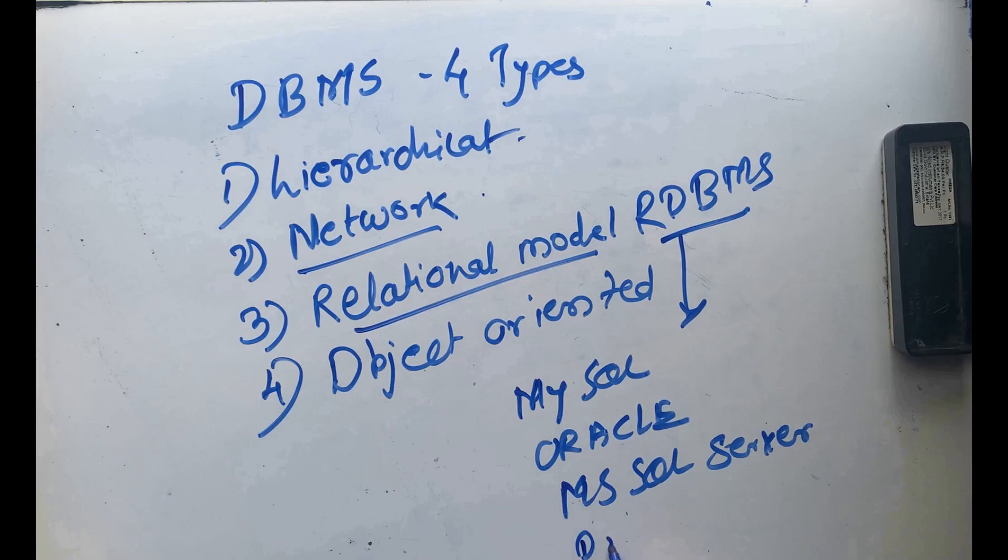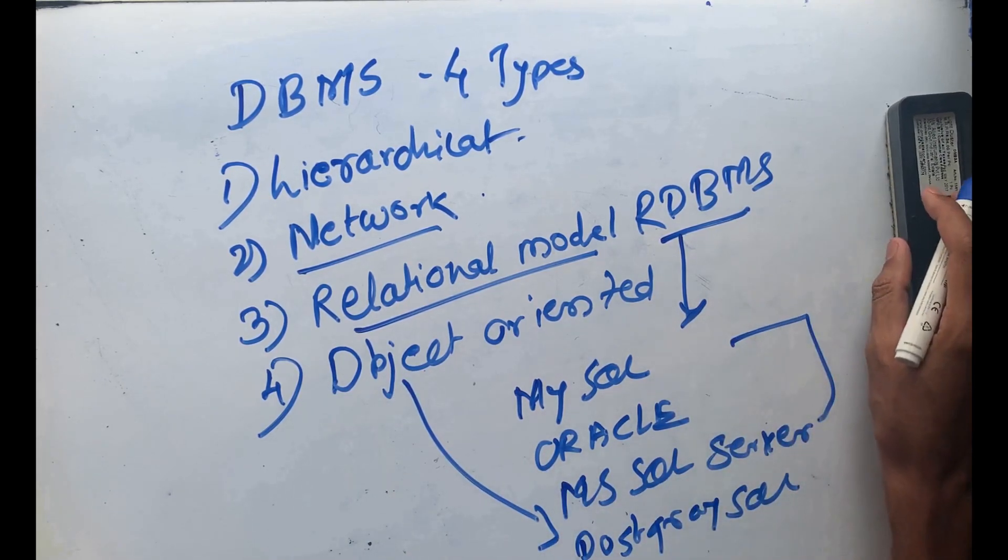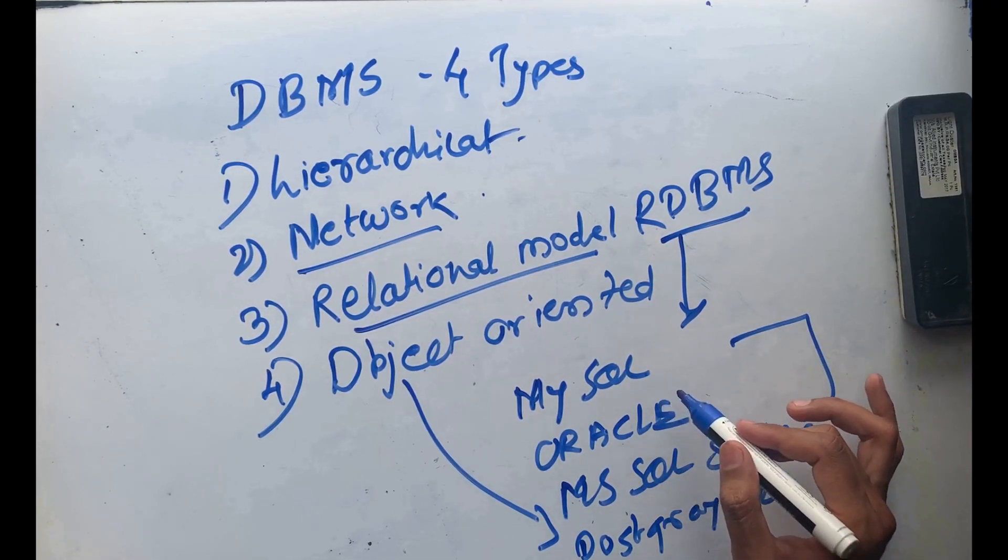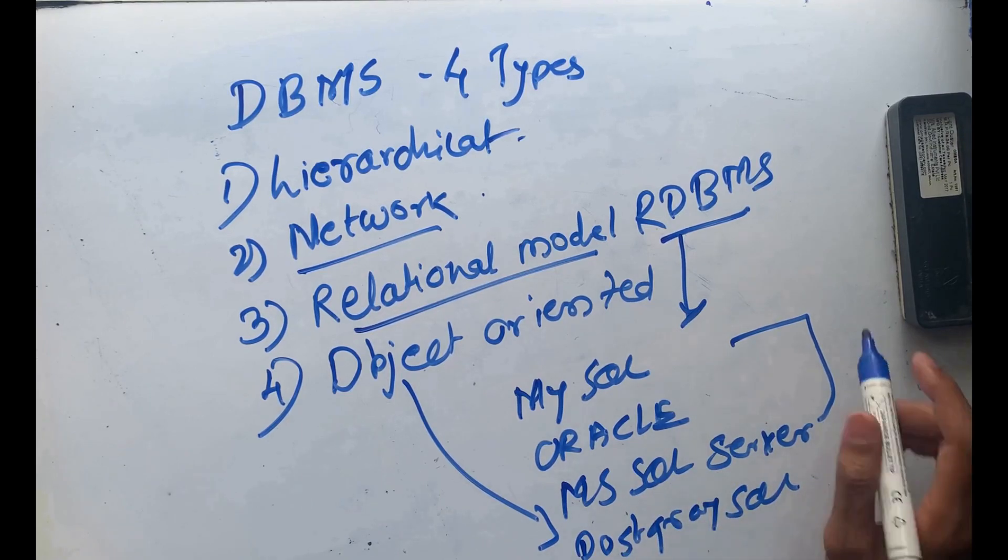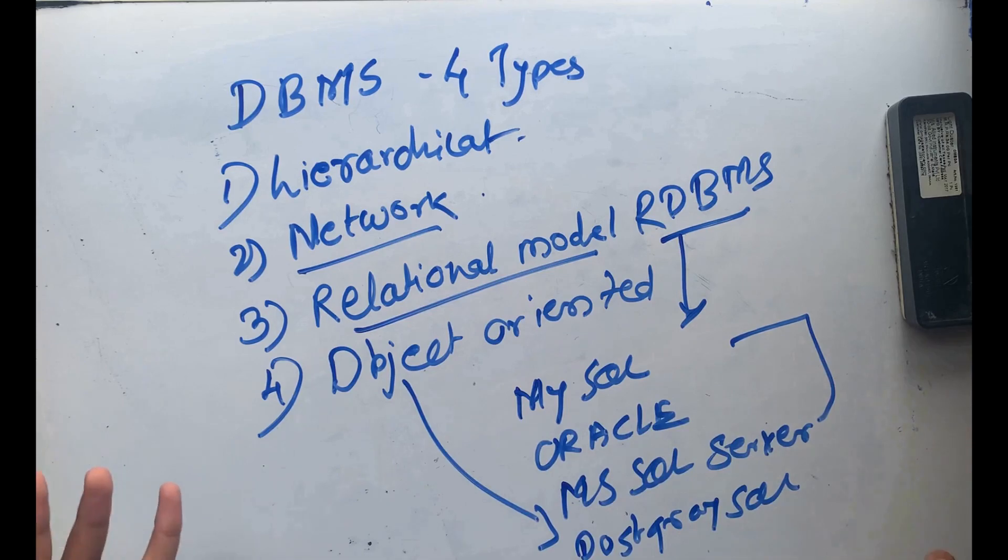There is PostgreSQL and Access as well. PostgreSQL is an example of object-oriented, but these are examples of RDBMS systems - the popular ones: MySQL, Oracle, Microsoft SQL Server. In upcoming sessions and videos, I am covering Microsoft SQL Server.